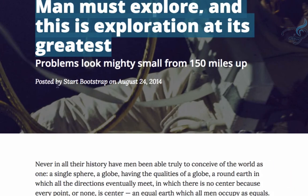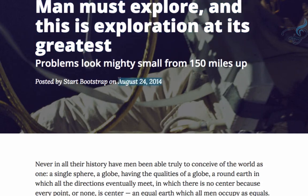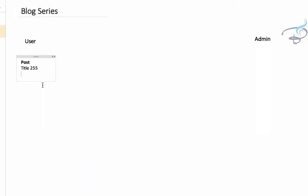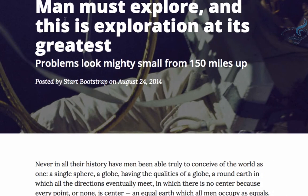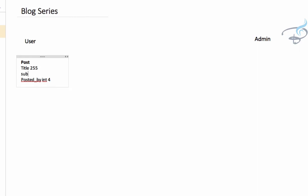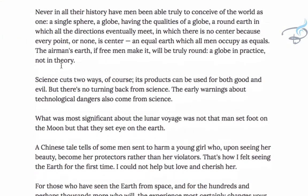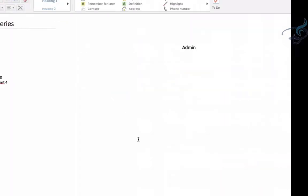We are working on Laravel so it will take care of created_at. We also need posted_by — the admin name — so instead of admin I'll simply say posted_underscore_by, and this will be an integer of size 4. Then let's talk about subtitle — subtitle has to be only 100 characters.